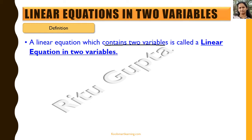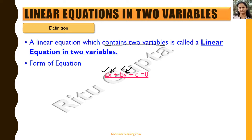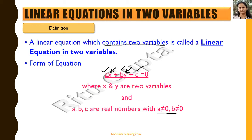The form of a linear equation in two variables is ax plus by plus c equals zero, where x and y are the two variables and a, b, and c are real numbers. It is important to note that a is not equal to zero and b is not equal to zero.